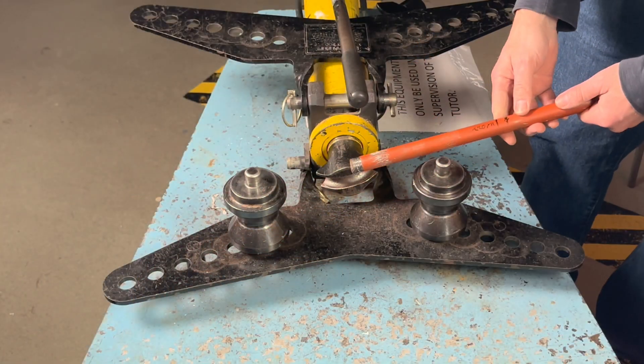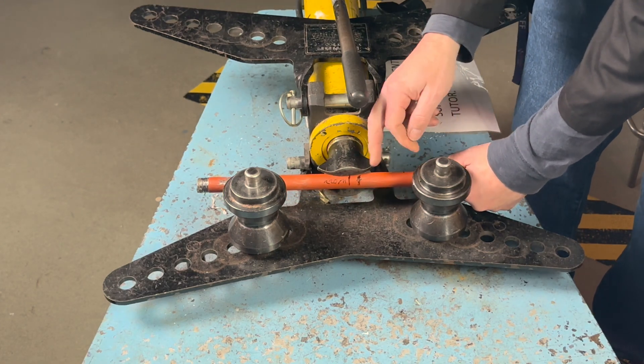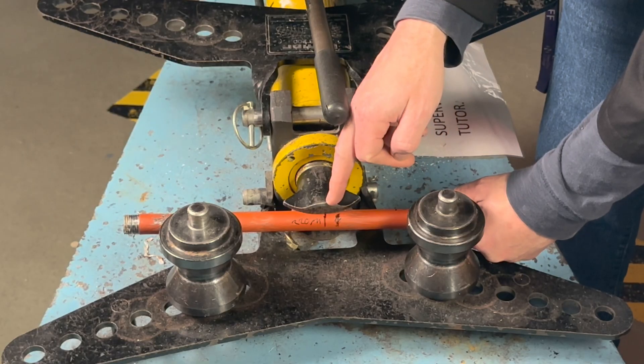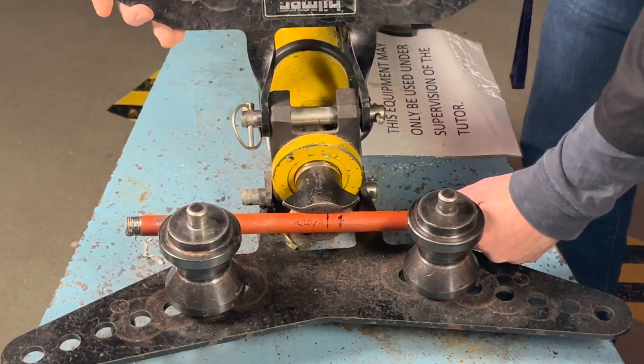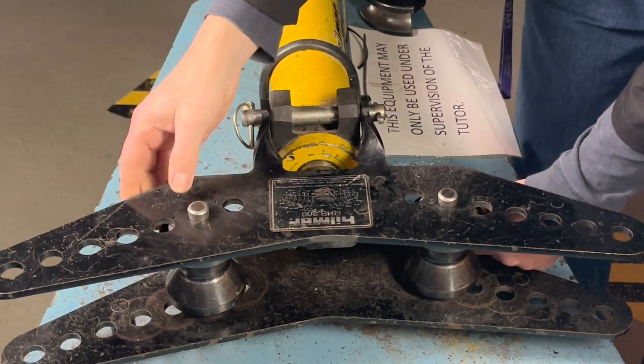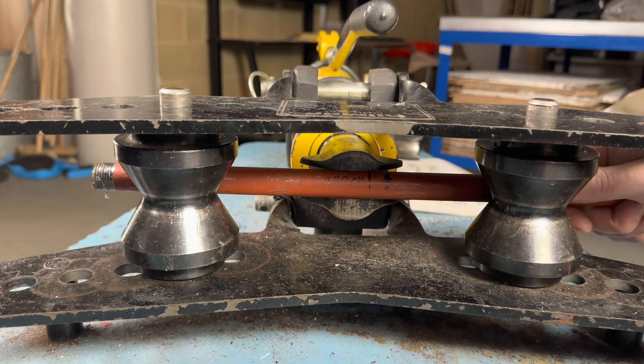Our line needs to sit in the middle of this former here. We close the lid and turn this to put some pressure on it. We need to make sure that this line is in the center of the former.